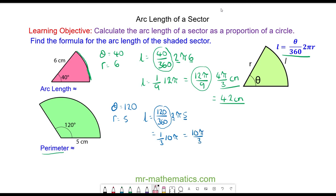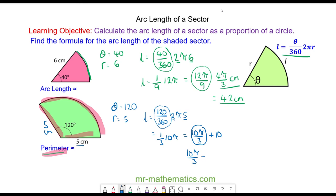That is the arc length, but we're asked to find the perimeter of the enclosed shape. Both radii are 5 centimetres each, adding 10 centimetres. So the perimeter is 10π over 3 plus 10 centimetres. As a decimal, that works out as approximately 20.5 centimetres to one decimal place.